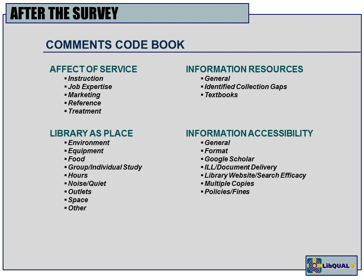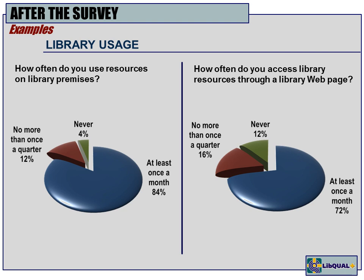Regarding comments, the general rule is you should get about 50% of comments relative to your participation number — so if 1,000 people participate, expect about 500 comments. For library usage among undergraduates: 84% visit within at least a month, and 72% use web resources. So while both the library webpage and premises are important, more undergraduates go to the building itself versus the virtual library.